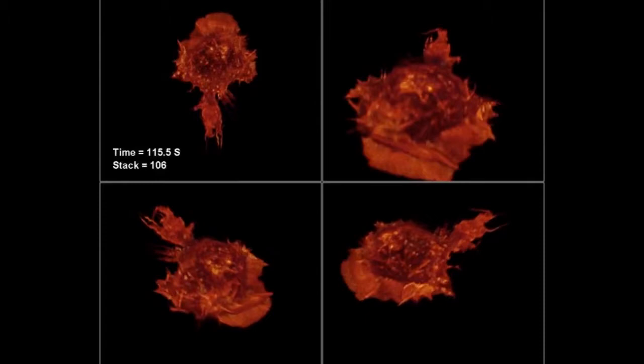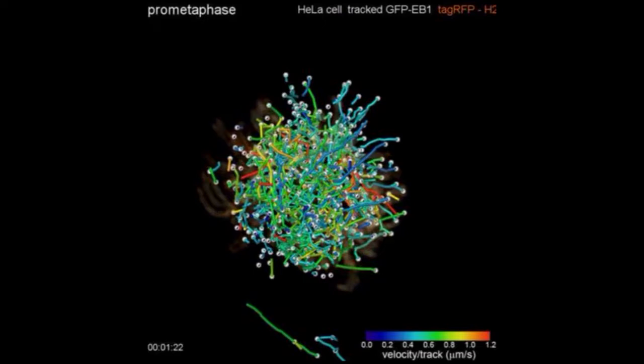The researchers illustrated the power of their approach using 20 distinct biological systems, including embryonic development in nematodes and fruit flies.